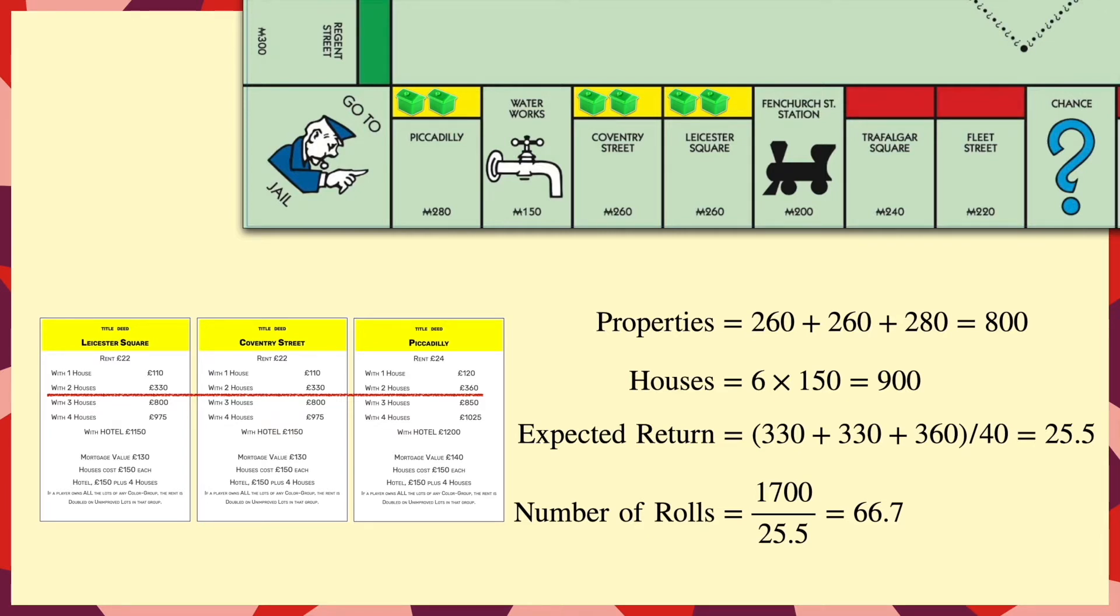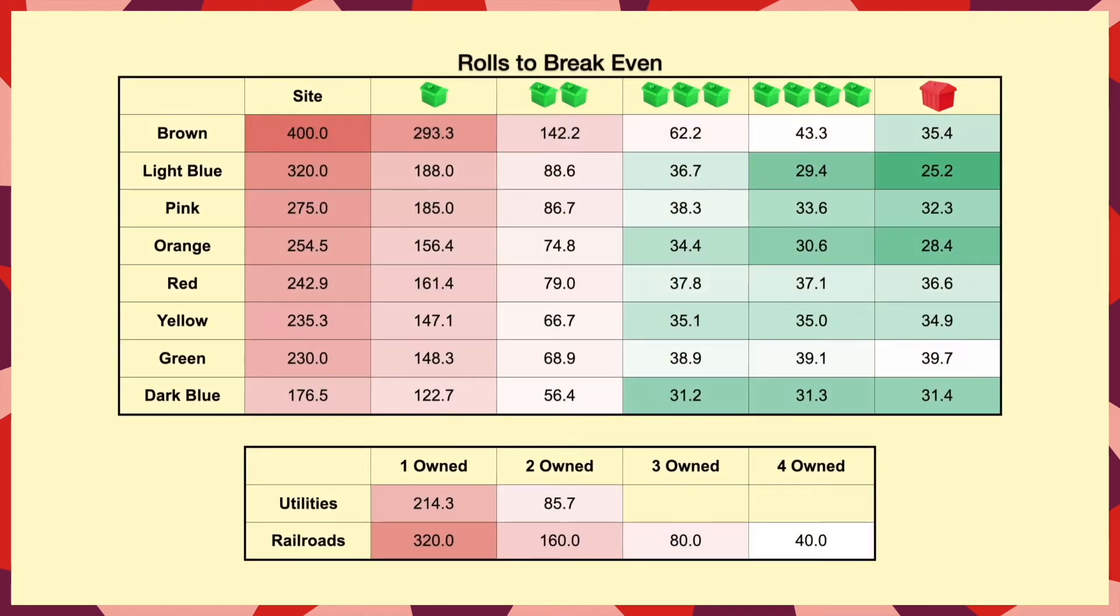Note that I say number of rolls instead of number of turns because in Monopoly if you roll a double you get to roll again so you can have several rolls in one turn. Now if we repeat this calculation for each set and each possible number of houses we get the following table.